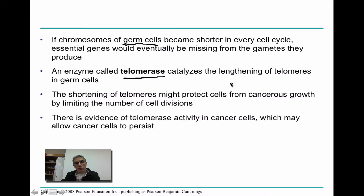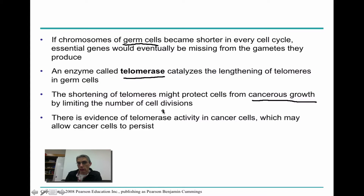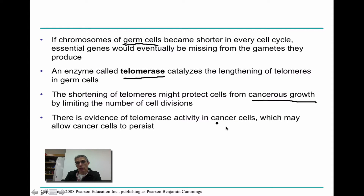The telomeres of germ cells are going to be essentially normal. Studies have shown that the shortening of telomeres might actually protect cells from cancerous growth by limiting the number of cell divisions that can occur. But there is also evidence that telomerase activity in cancer cells might actually allow cancer cells to persist.